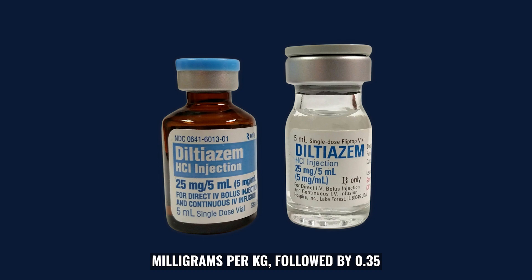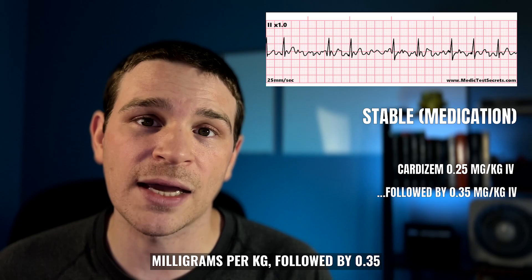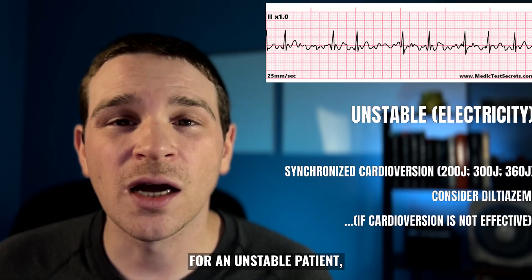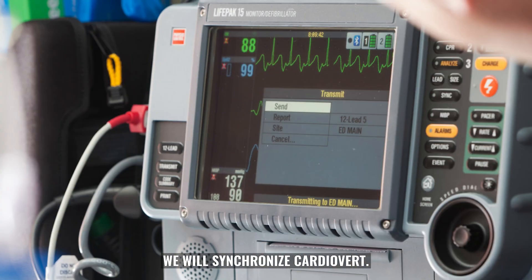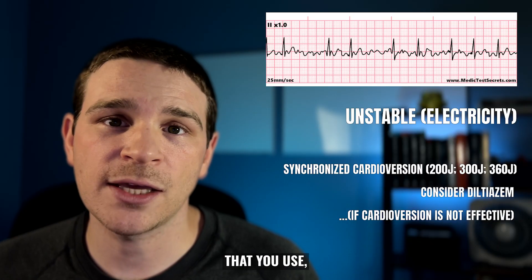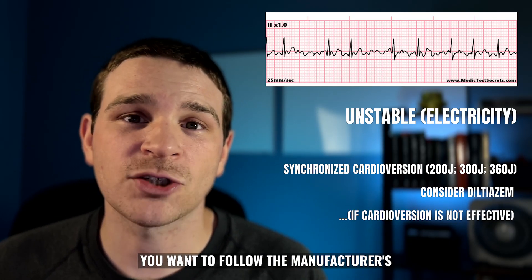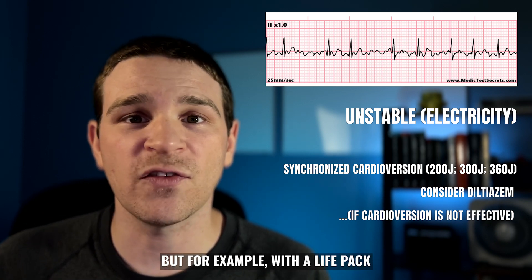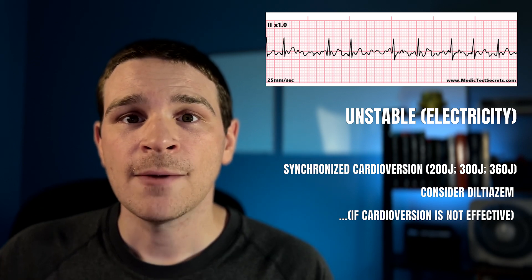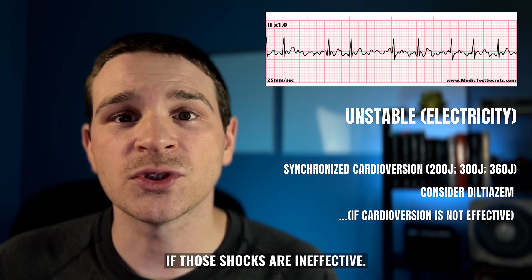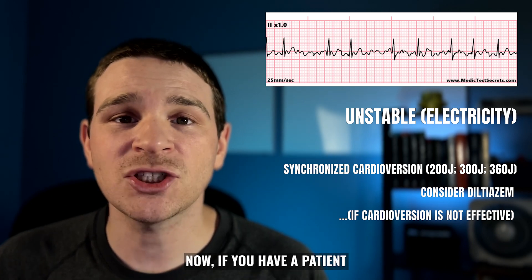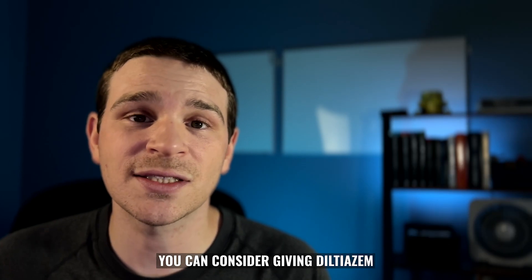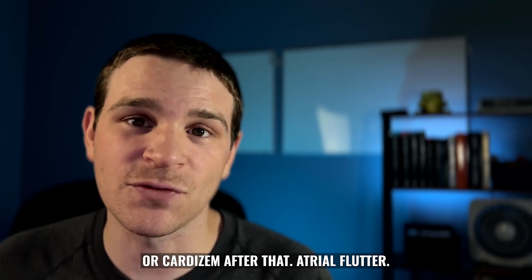The initial dose of Cardizem is 0.25 milligrams per kilogram, followed by 0.35 milligrams per kilogram 10 to 15 minutes later. For an unstable patient, we will synchronize cardiovert. With a LifePak, we would start at 200 joules and escalate if those shocks are ineffective. If synchronized cardioversion is not effective and the patient is unstable, you can consider giving diltiazem or Cardizem after that.